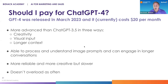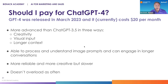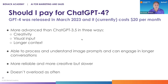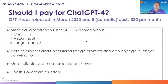ChatGPT 4.0 does three things way better than 3.5: it's more creative, it allows visual inputs like PDFs or photographs, and it gives you longer context. It's able to process image prompts, engage in longer conversations, and is more reliable — though it is slower.